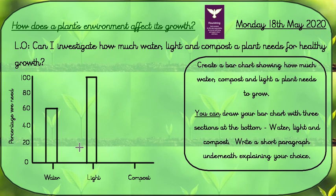Refer to your table and then write your paragraph. For example, if you've said 60% water, tell me why you need 60% water. If you need 100% light, why do we need 100% for light? If you're struggling, you could always watch our experiment again and see how much of each component we need for plants to grow healthy and strong. Good luck, and I look forward to seeing your tables and reading your short paragraphs.